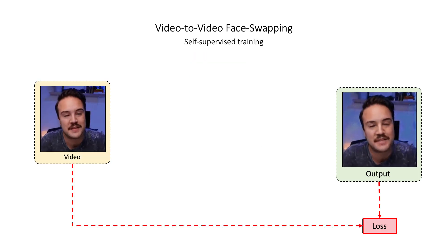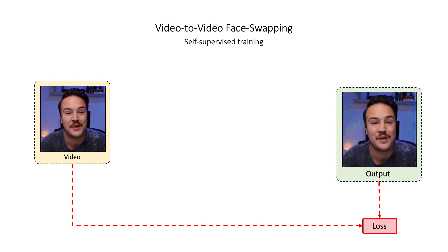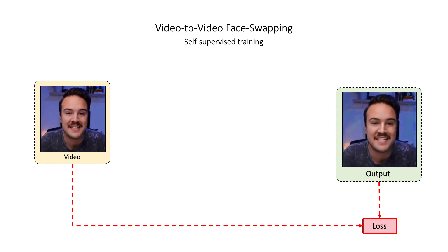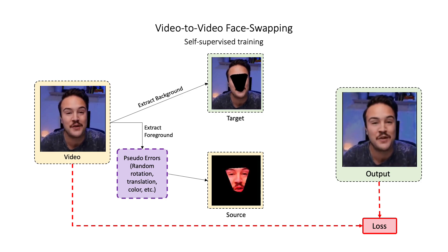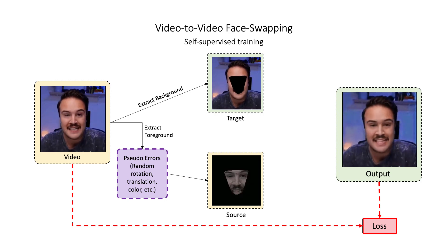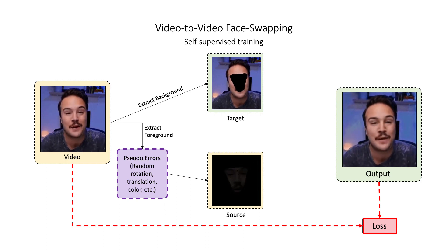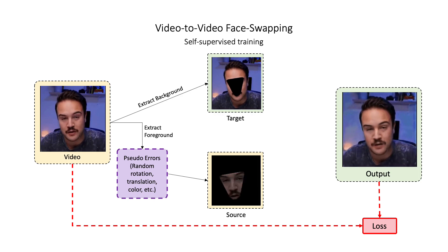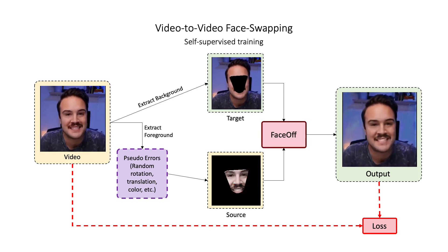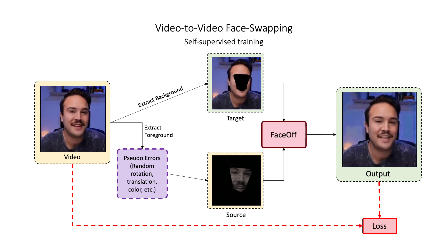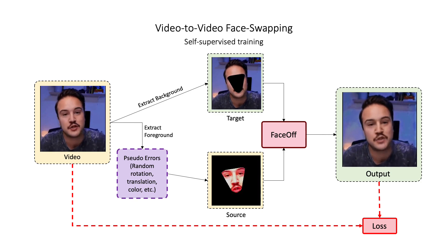We use a hard distance loss like Euclidean distance to compute the loss between ground truth and the output in a self-supervised setting. In this setting, we use a single video to generate the source and the target. The target is the background and the pose extracted from the video. The source is generated by first extracting the foreground of the video and then adding random errors. The inputs are then passed through Face Off, which is expected to fix these random errors and generate back the original correct video.